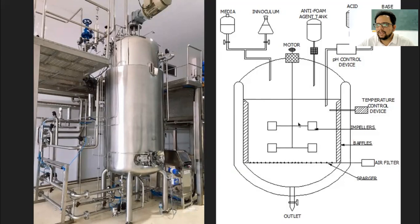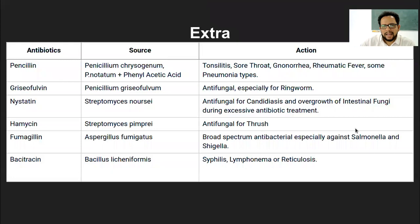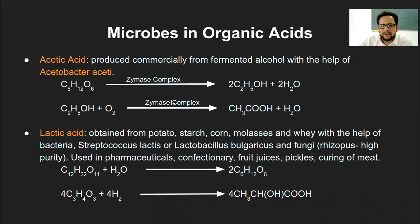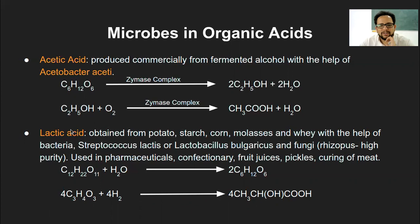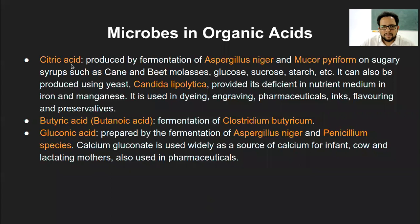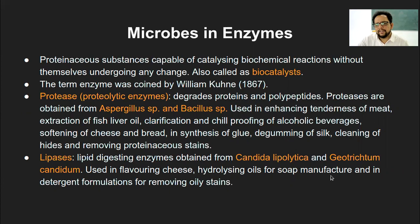You need to remember where the propeller or impeller is located, as MCQ-type questions may come from that. There will also be match-the-pair type questions based on antibiotics and their sources - remember at least those two columns. We also looked at microbes used in organic acid production: Acetobacter aceti for acetic acid, and Lactobacillus species or Streptococcus lactis for lactic acid production. The organism name is quite similar to the organic acid it produces, which makes it easier to remember.